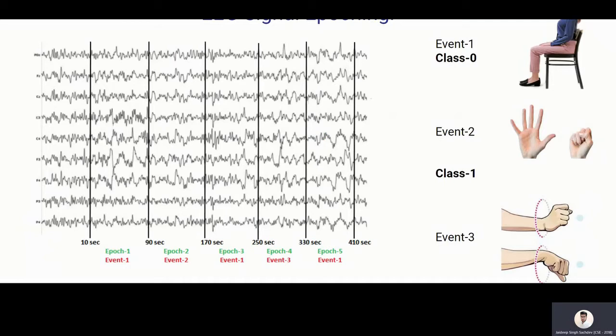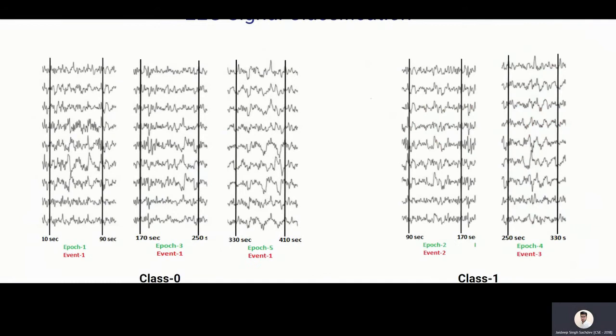So event 1 is nothing but a steady state, means the person is not doing anything. And event 2 is a state where a person is moving his hands, doing some actions. So what I did is that event 2 and event 3, I have combined and created a class 1. And event 1 is class 0.